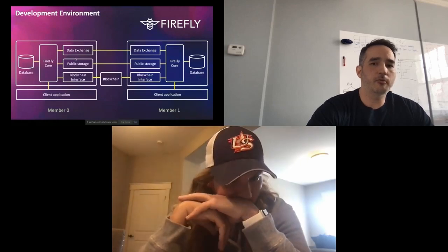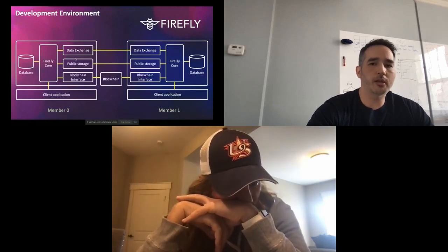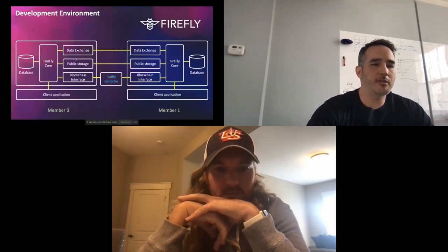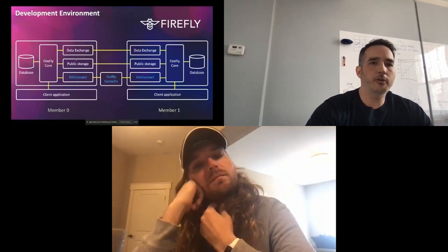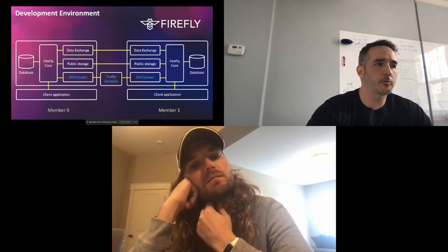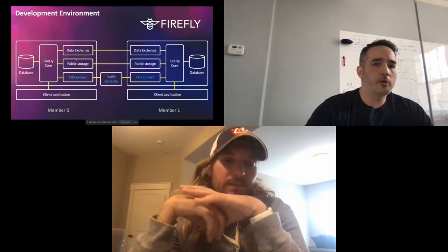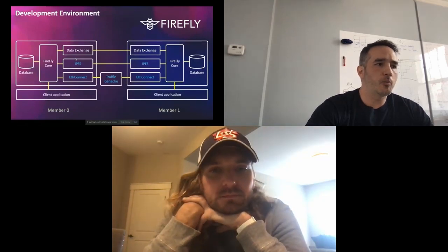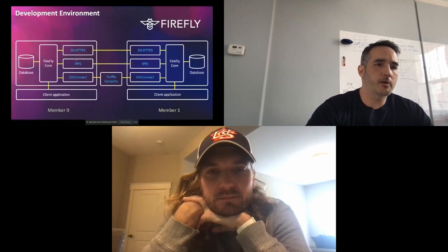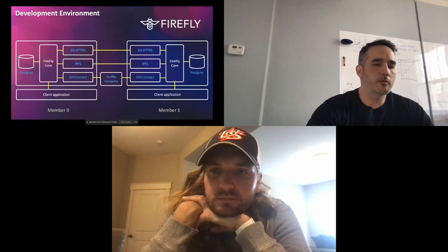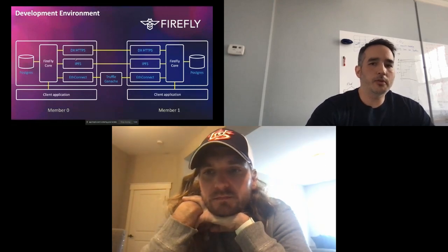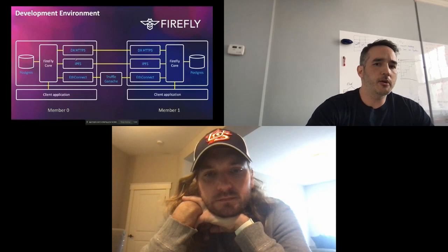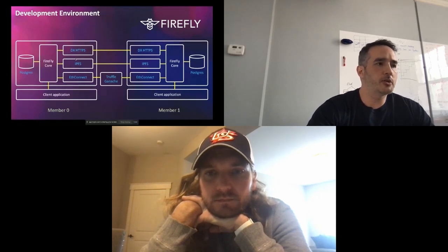Specifically, for the blockchain we are going to get Truffle Ganache. For the blockchain interface, we are going to have ETH Connect. All of these projects are available in the repositories for more information. For the public storage, we use the Interplanetary File System or IPFS. Mutual TLS data communications is used for the private data exchange. Finally, Postgres is used for the database. That was a very quick summary of how the architecture looks like when running Firefly locally using the CLI.